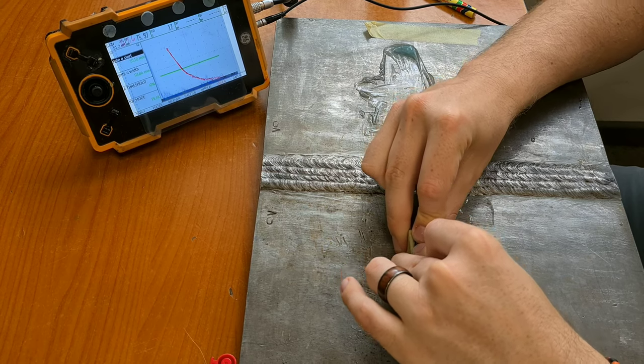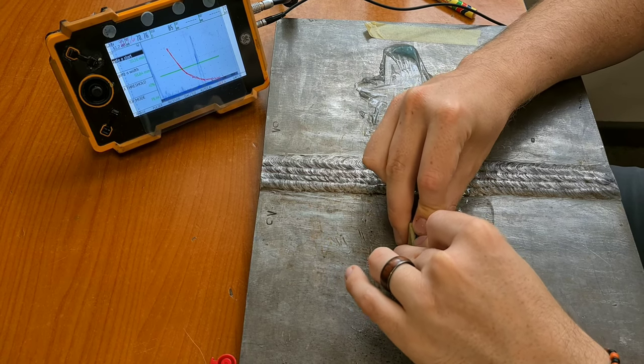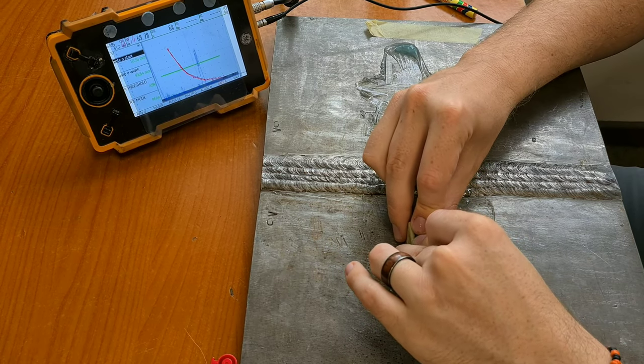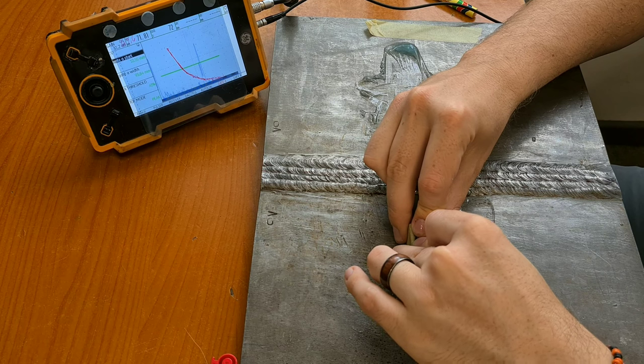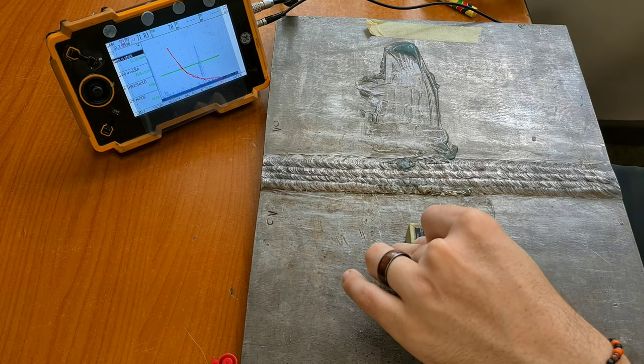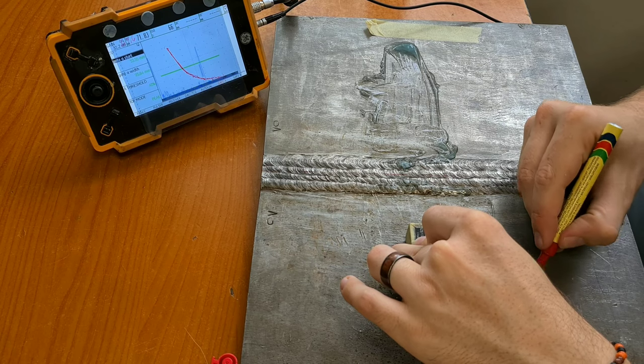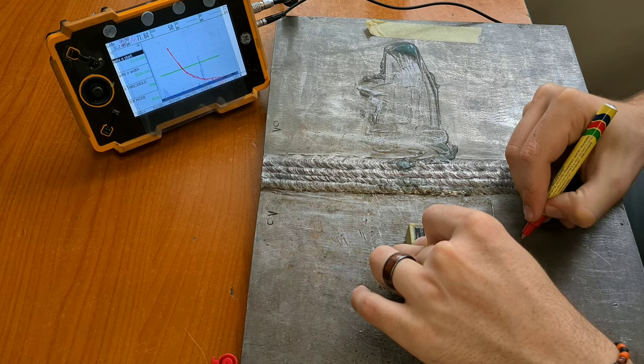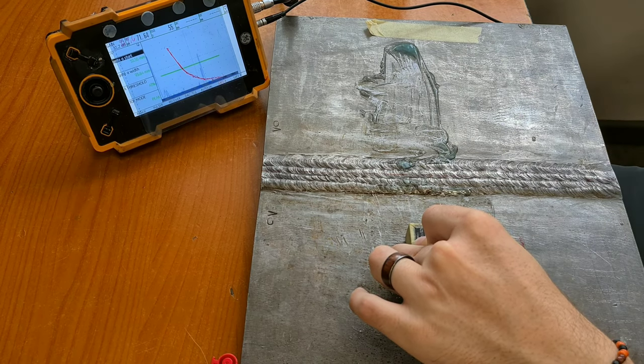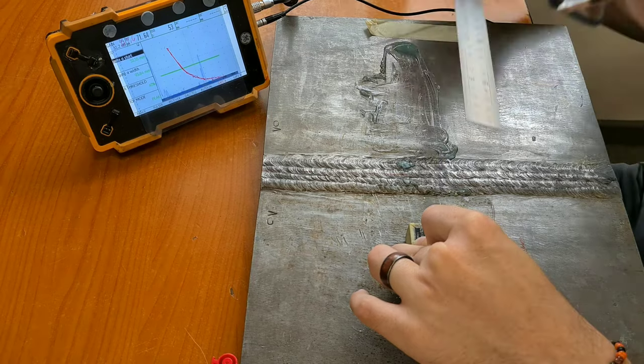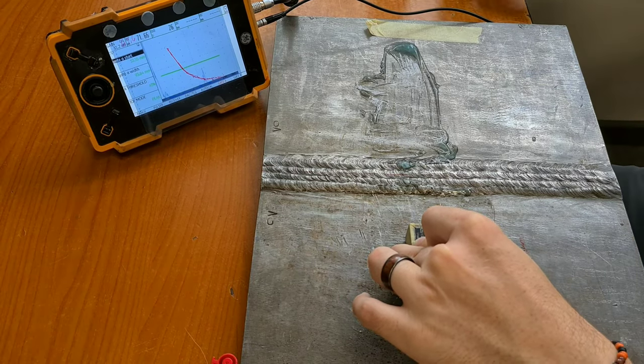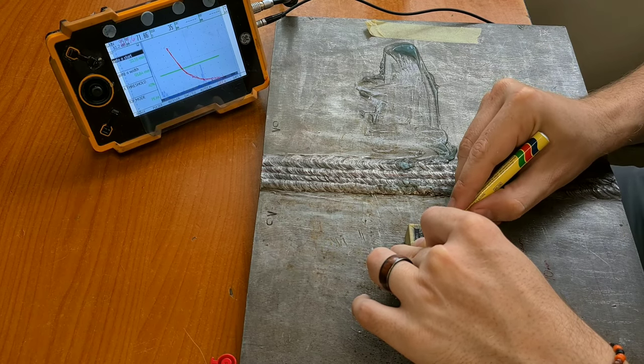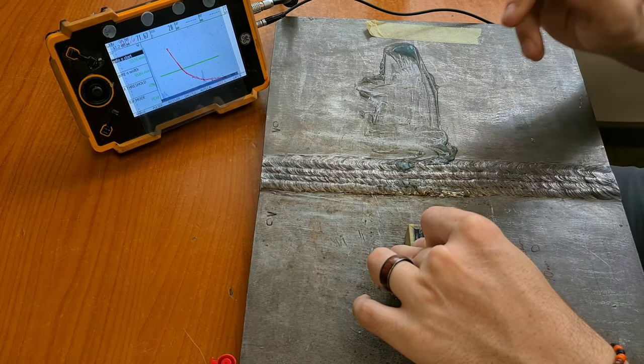But when I find it and I maximize it, we'll see about 72 millimeters of beam and it's about 70mm from the center. So 70 millimeters from where my sound exits my probe to the center of the weld.